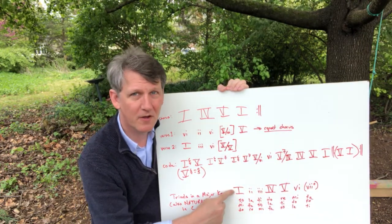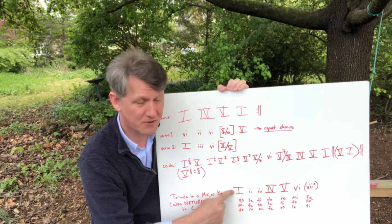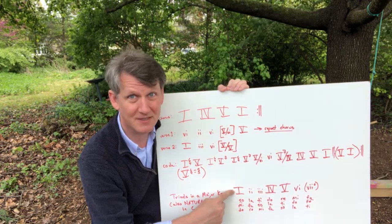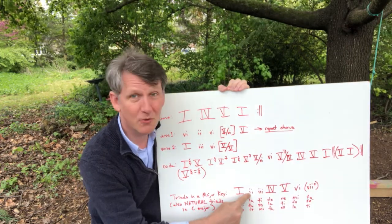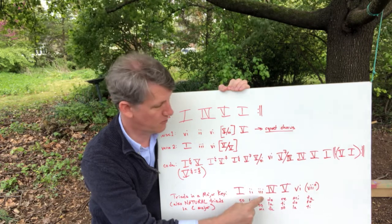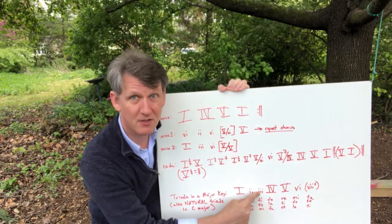The home chord, the chord built on the first scale degree, is going to be major in a major scale. That makes sense, right? The two chord, the chord built on the second scale degree, is going to be minor. The chord built on the third scale degree is also going to be minor.